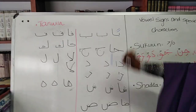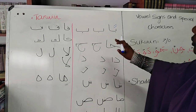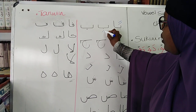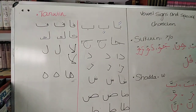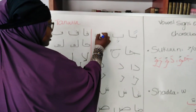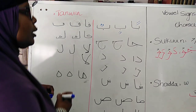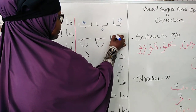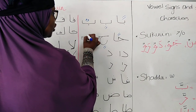It will always go with an alif. So it will be: pan, pin — pun, pan, pin.